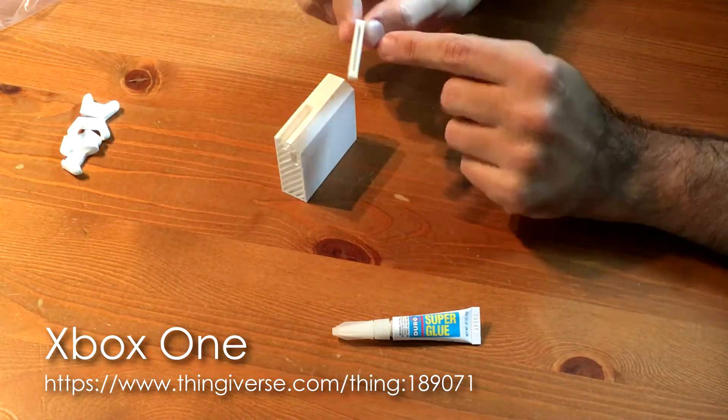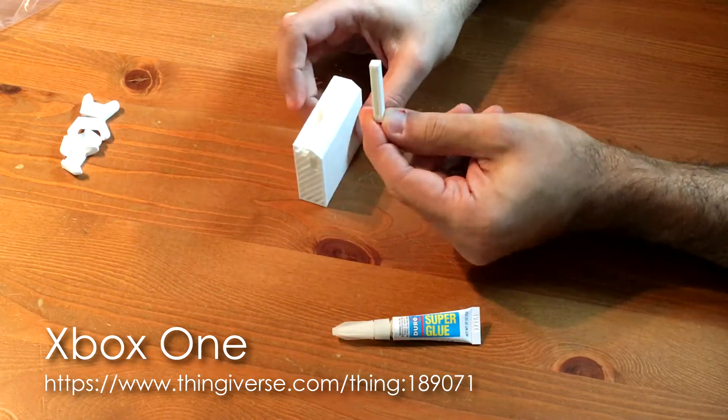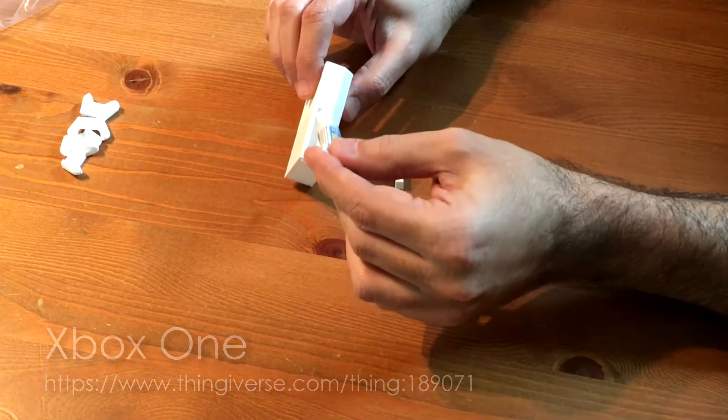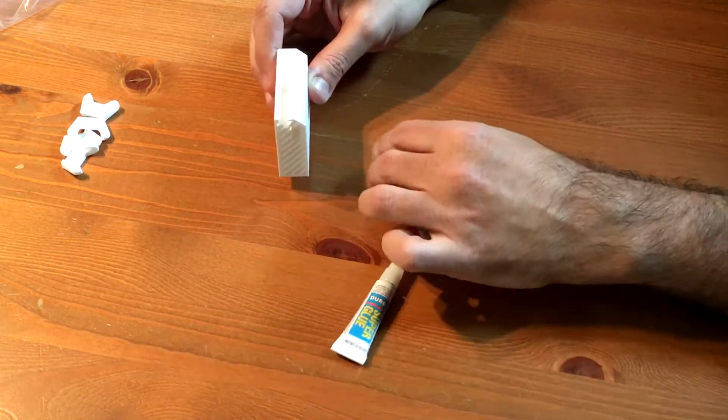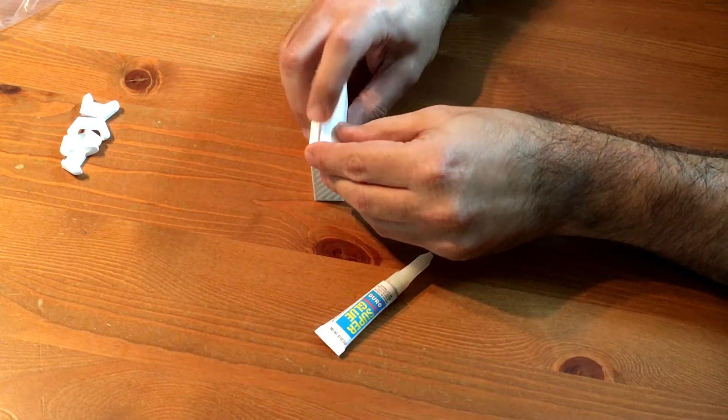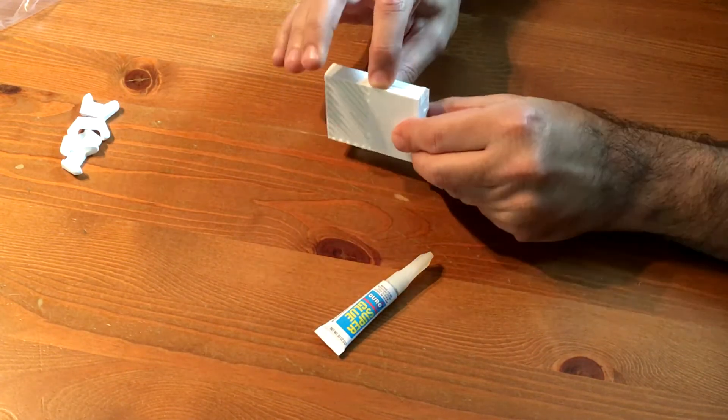Super simple build. You just add a little bit of regular super glue into the channel—just a tiny bit—then you can slot the DVD drive in there and just hold it in place for a minute or two until the glue sets. And at that point, that's it, your Xbox One is done.